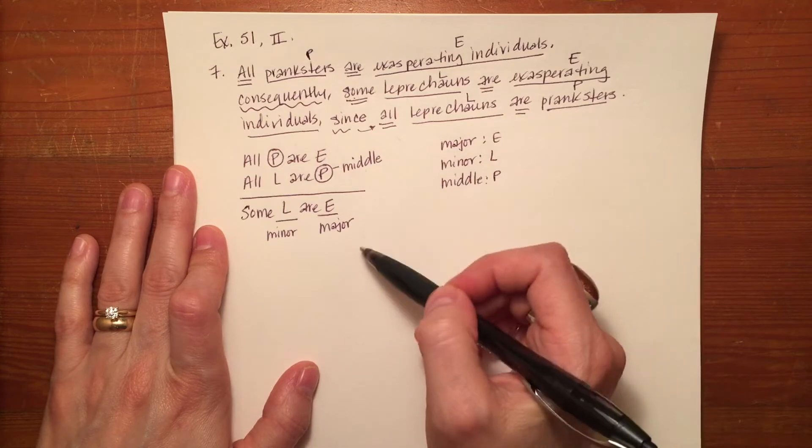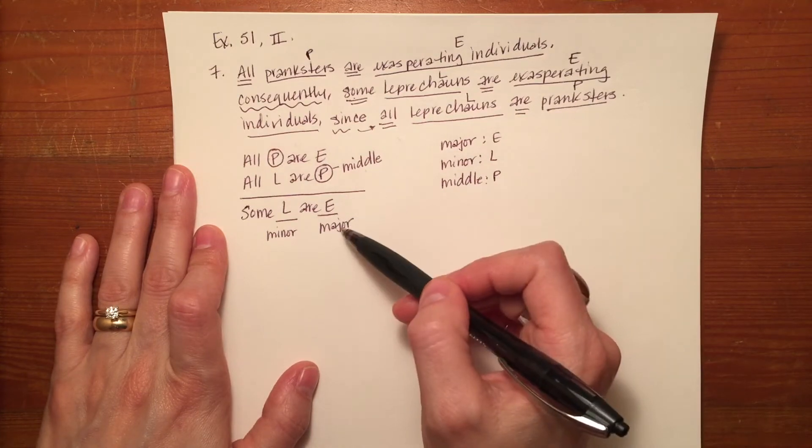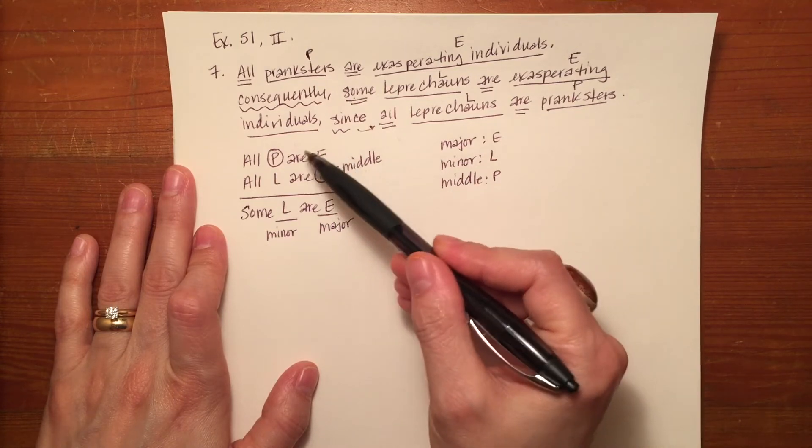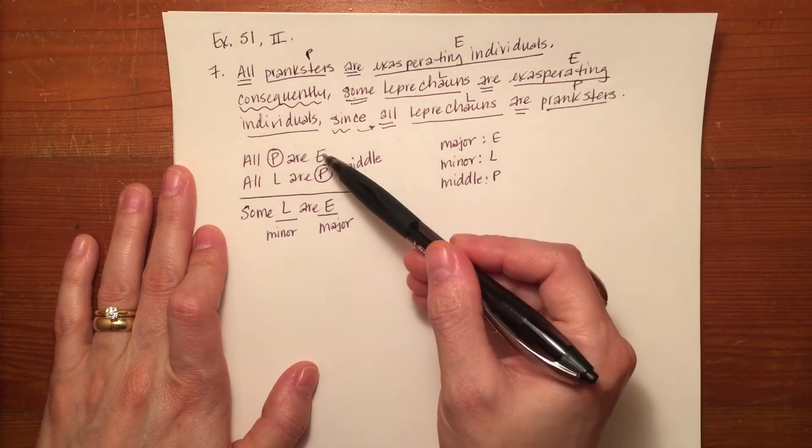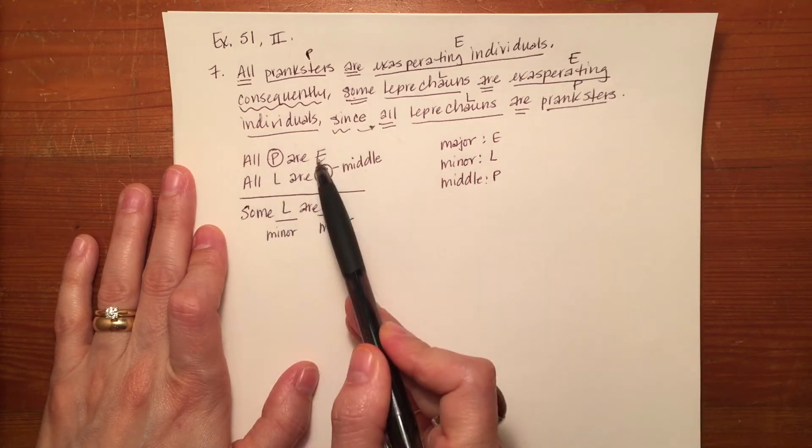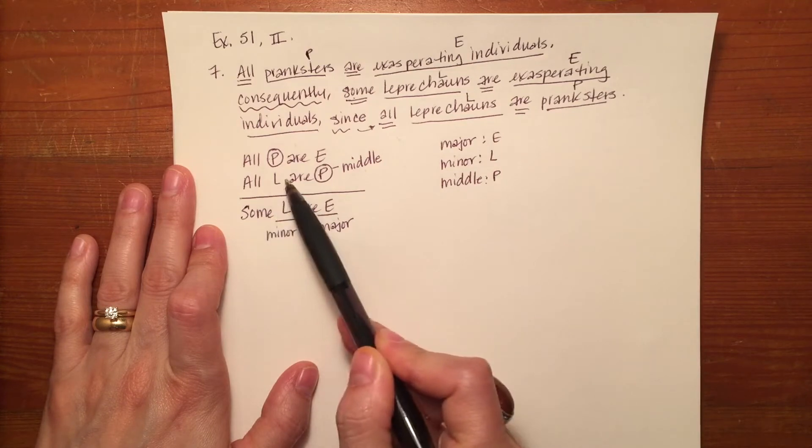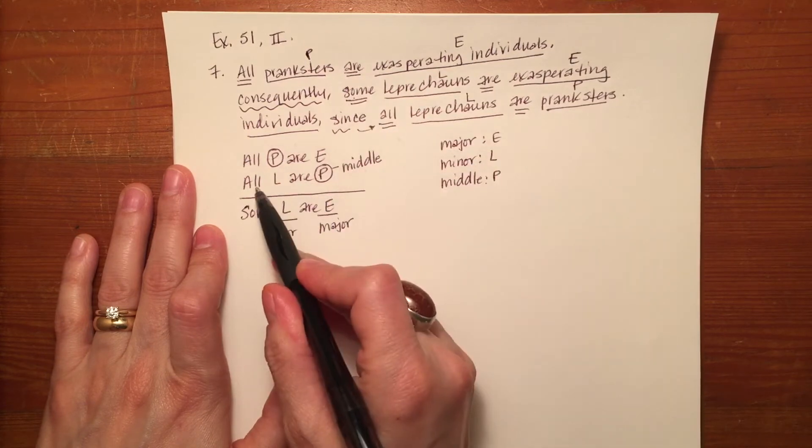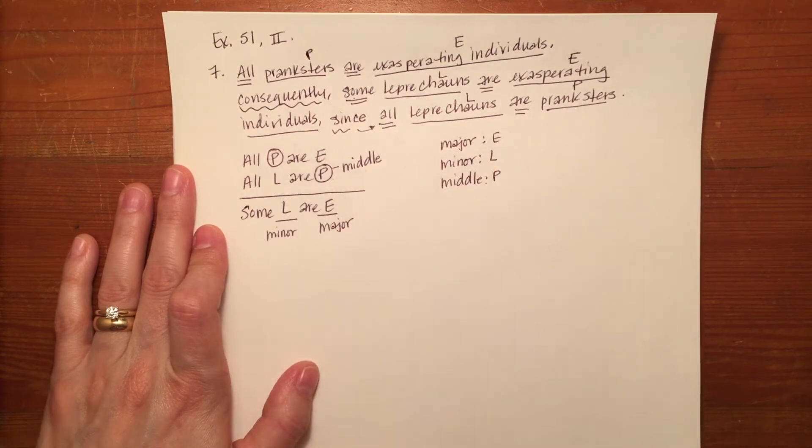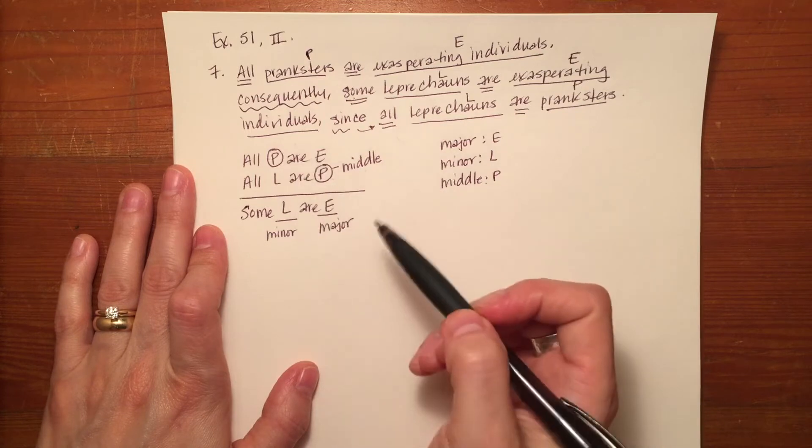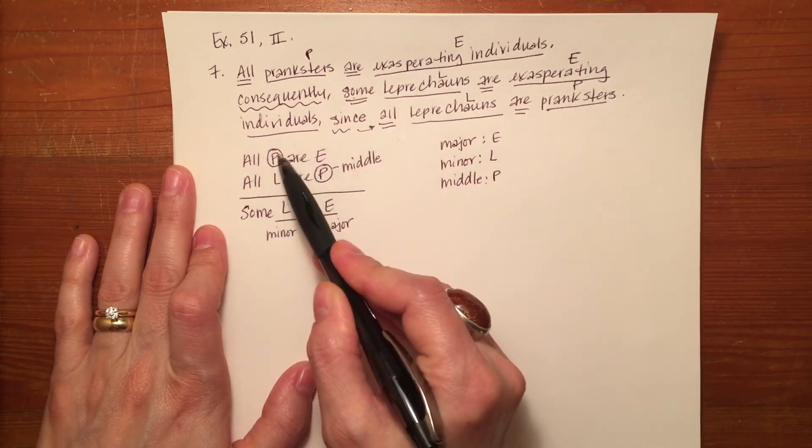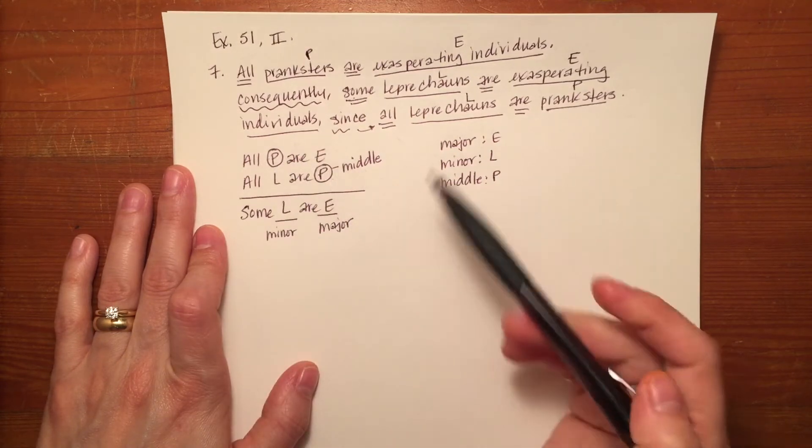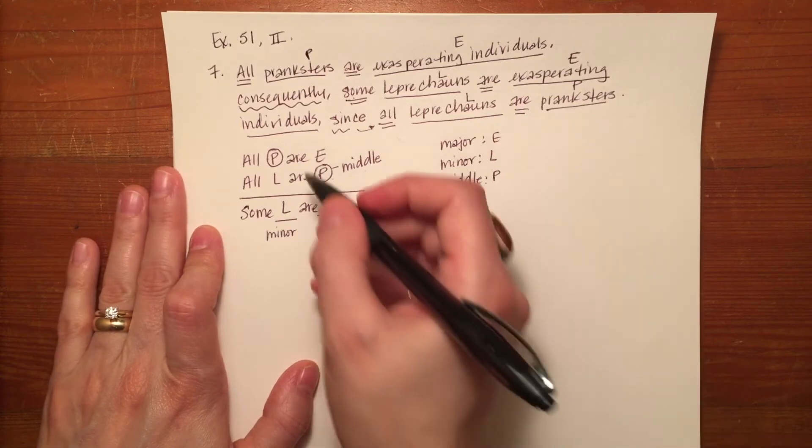Now I have to make certain that my major premise, which is the premise containing the major term, is listed first. My major premise is the one containing the major term E. It is, in fact, listed first. The second statement that's listed is the premise with the minor term. So it is the minor premise and it is listed in the correct order. If it had not been listed in the correct order, I would have simply switched the places of these two. Now that would have changed the formation of my middle terms. So I had to make sure that it was in the correct order.